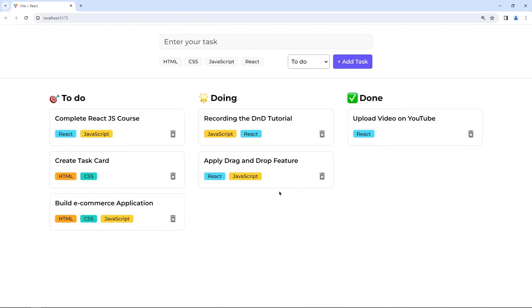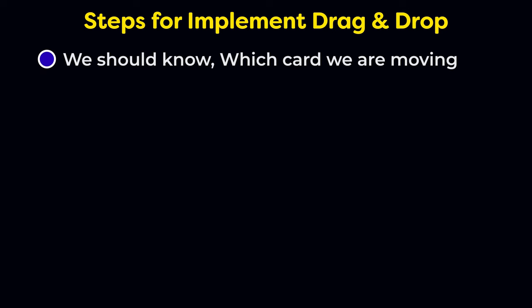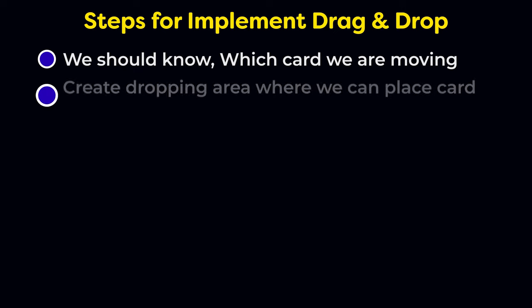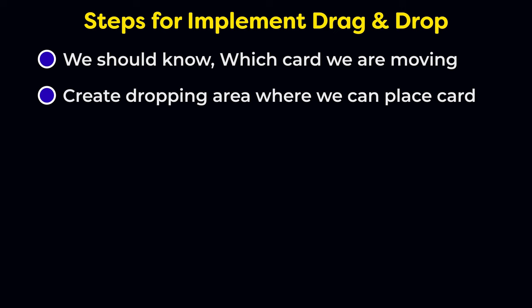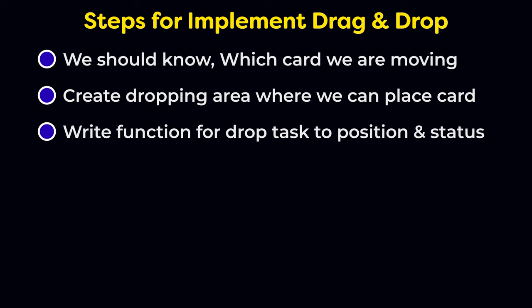In this application we have three categories, but the drag and drop feature stays the same. So I divided drag and drop into three steps. First, we need to know which card we are moving. Second, we create a dropping area where we can place our card. Third, we write a function to drop the task to a position and change the status if we move it to another category.